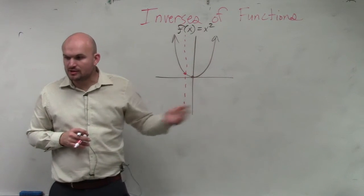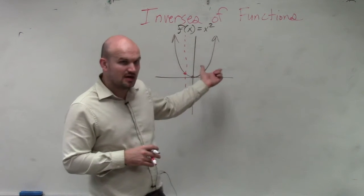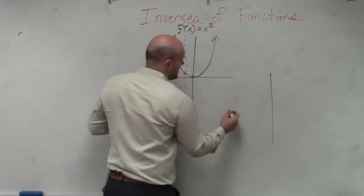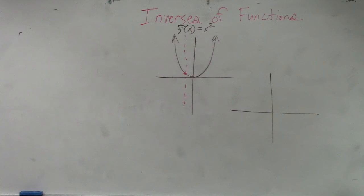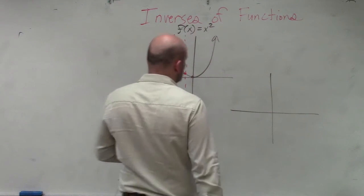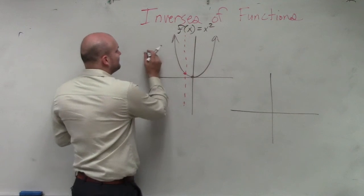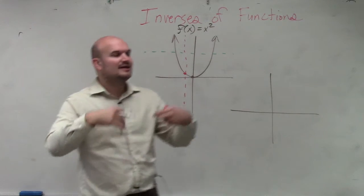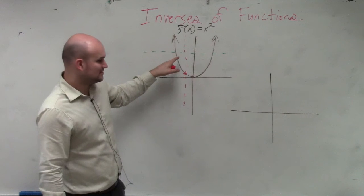Then what we later learned was the inverse of this function. When we look at the graph, we have an issue. Does anybody remember what the test was to determine if something was an inverse of a function? The horizontal line test. And if we see this graph, it does not pass the horizontal line test — meaning the inverse is not a function.